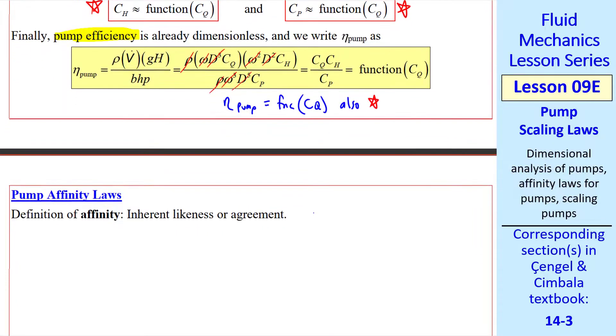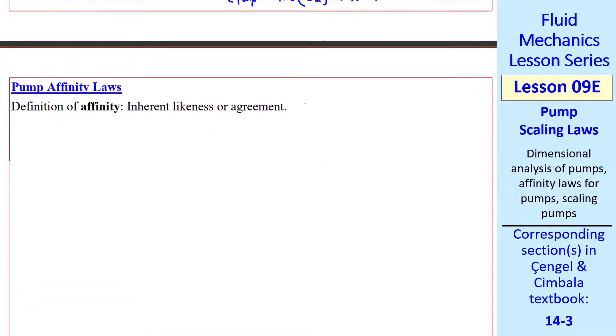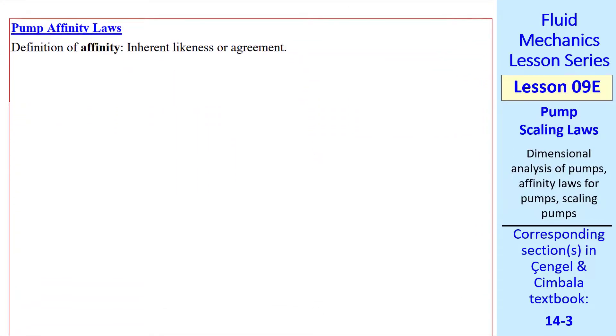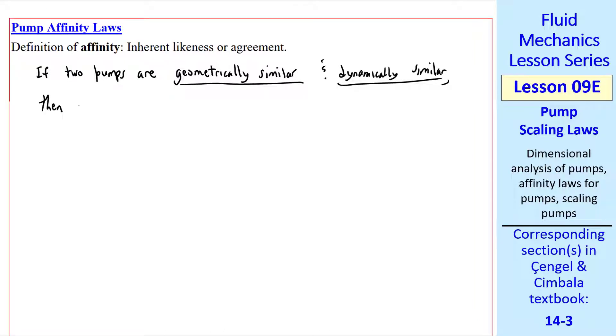Turbomachinery engineers like to talk about the pump affinity laws. I looked up affinity in the dictionary. It's defined as inherent likeness or agreement. So we'll use it this way. If two pumps are geometrically similar and dynamically similar, which by review means that the independent pi's are equal between the two pumps, then their pump performance curves fall on top of each other when plotted non-dimensionally. Here's an example.